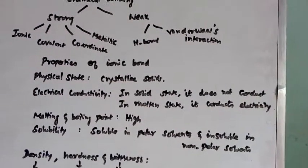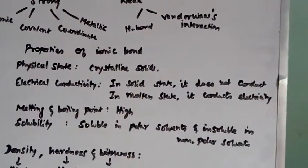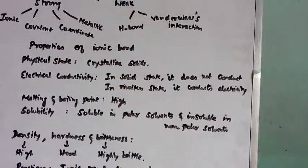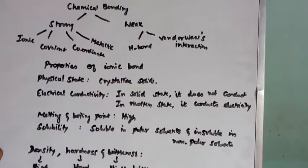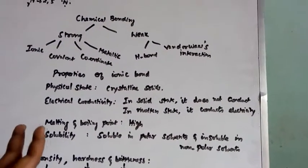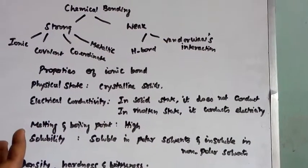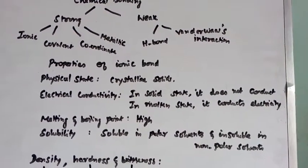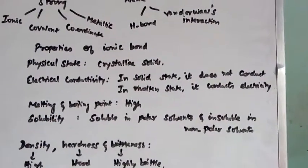Electrical conductivity. Whether it will conduct the electricity or not. When ionic compound is present in solid state, it is not having free ions. For conducting electricity, two things are needed. Either it should have free electrons or else it should have free ions. Free electrons or free ions must be there to conduct electricity.